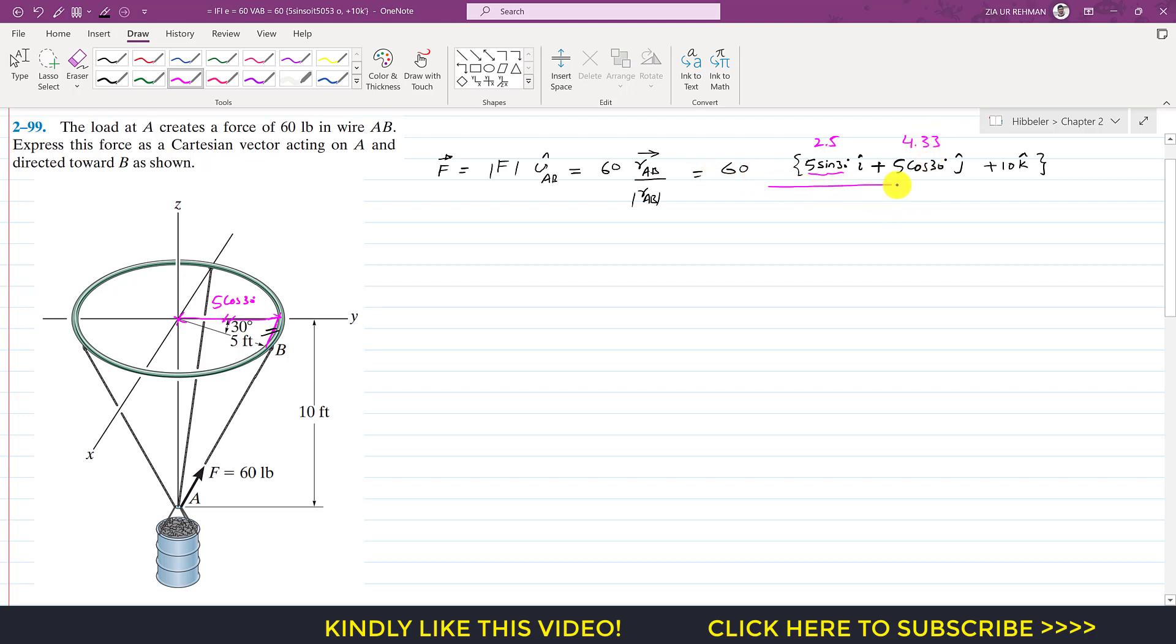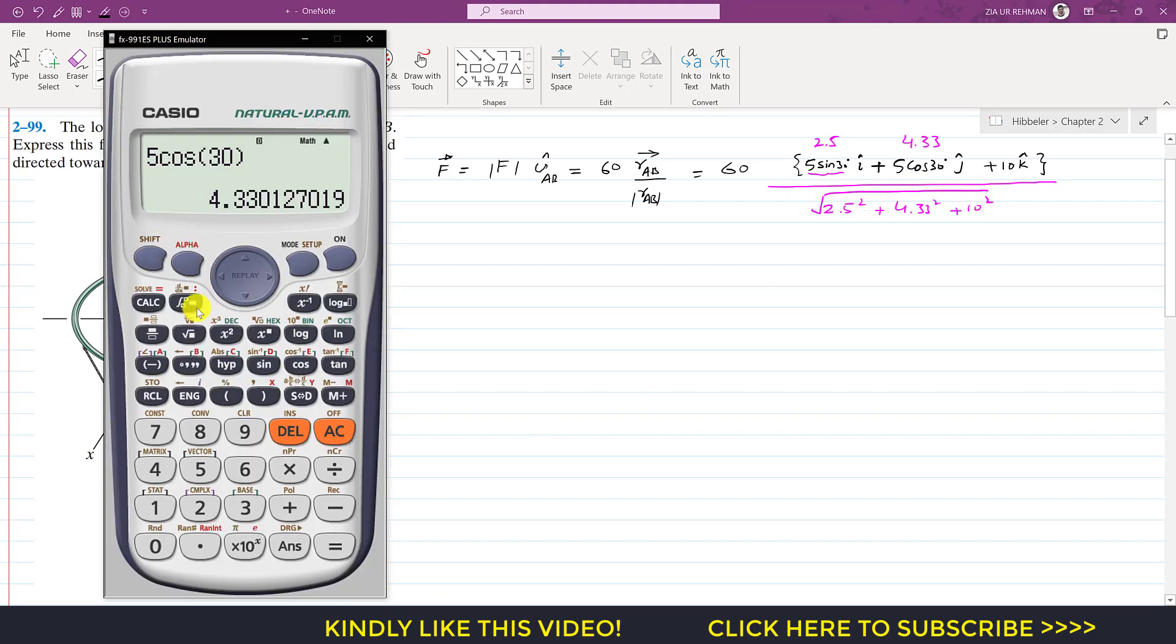We can find its magnitude: the magnitude is the square root of 2.5² plus 4.33² plus 10². So this equals 11.18.